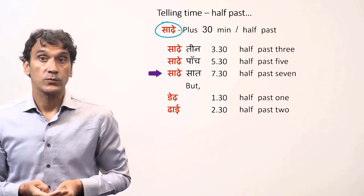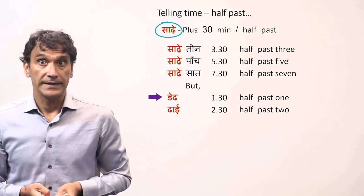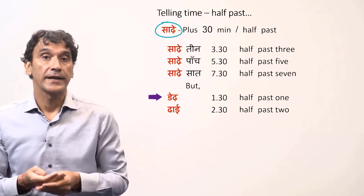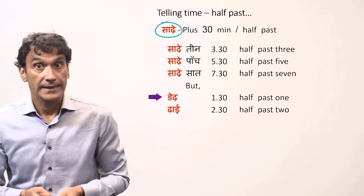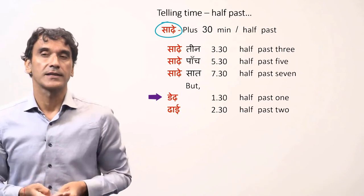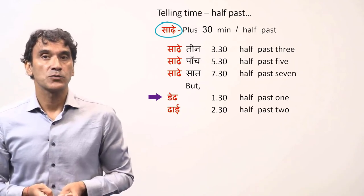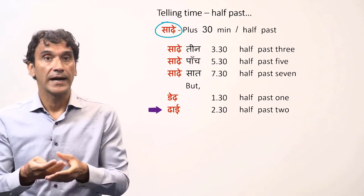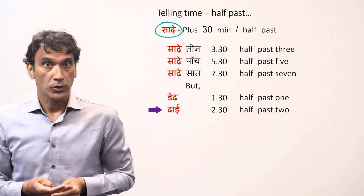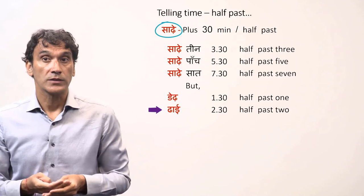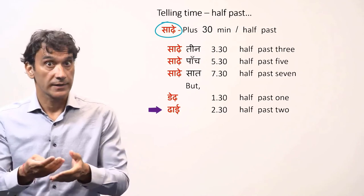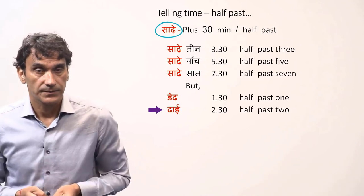There are two exceptions: for half past one, the word is dedh — not sade ek, which does not exist in Hindi. And for half past two, the word is dhai — not sade do, which also does not exist in Hindi.